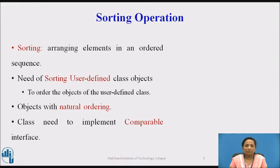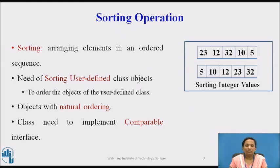Sorting is an operation performed on a list of elements in which elements are arranged in order sequence, i.e. ascending or descending order. If we want to sort numbers, it will be in ascending or descending order. Here is a list of numbers sorted in ascending order. But if we want to sort objects such as apples, how should we compare and sort apples?